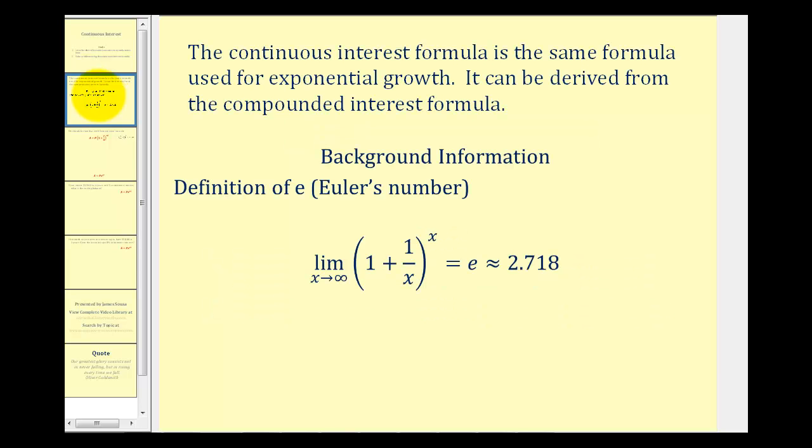The continuous interest formula is the same formula used for exponential growth except it's often stated using different variables. The formula for continuous interest can be derived from the compounded interest formula, which we'll do in just a minute.